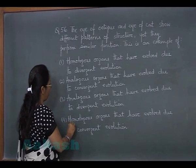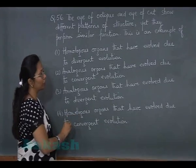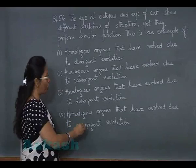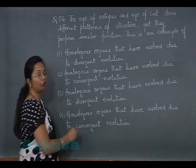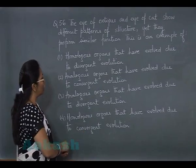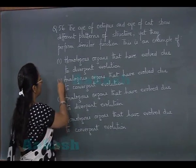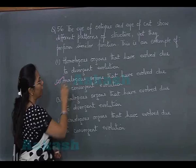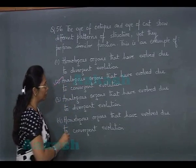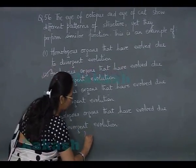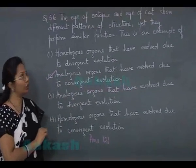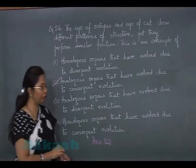Option 4 states homologous organs evolved due to convergent evolution — that is wrong because homology leads to divergent evolution, not convergent. Therefore the only correct option is option 2: analogous organs that have evolved due to convergent evolution, where unrelated organisms develop the same type of features. Our answer is option 2.